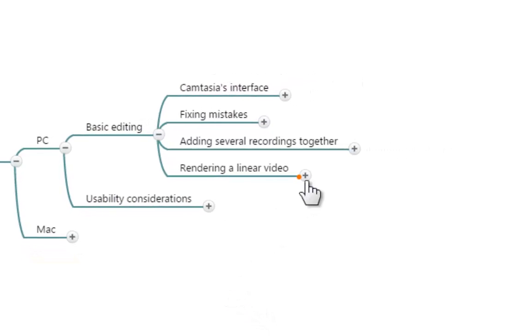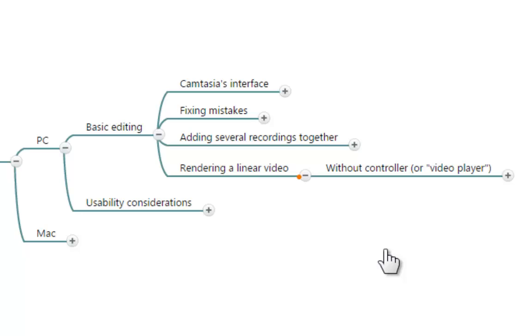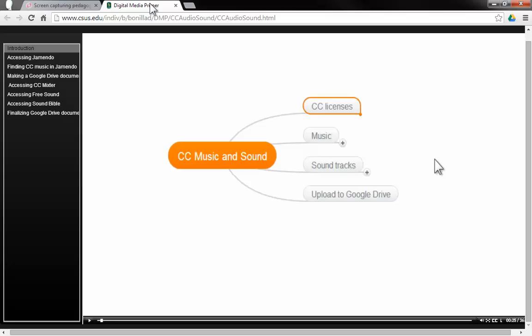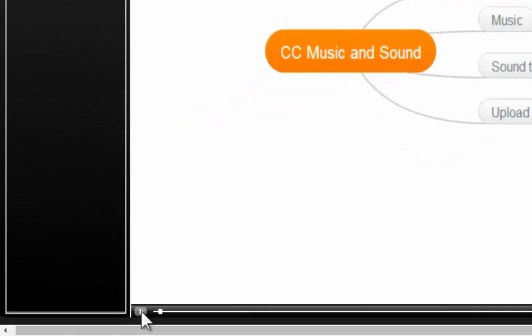When you render a linear video, Camtasia is going to refer to it as a video without a controller or a video player. I'm going to share one of my own productions — a video about how to create Creative Commons music and sound. What you're looking at right now on the screen is the video player that Camtasia is referring to.